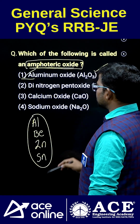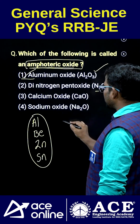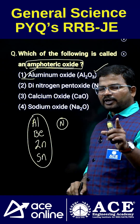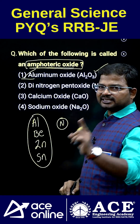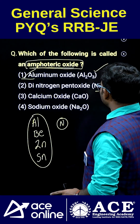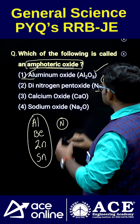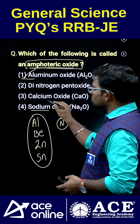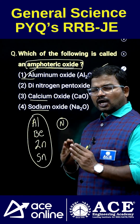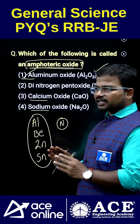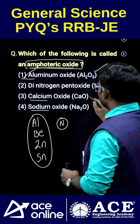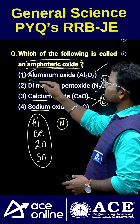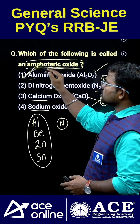Now, nitrogen is a non-metal, and non-metal oxides are always acidic in nature. What about calcium and sodium? These two are metals, and metal oxides are always basic in nature. So calcium and sodium oxides exhibit mostly basic nature. Therefore, the correct answer is option one.